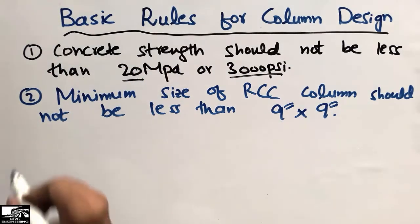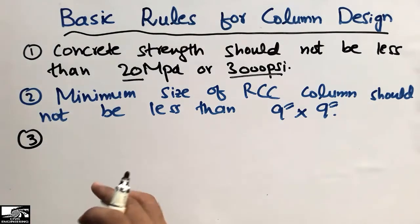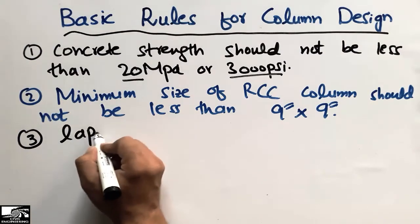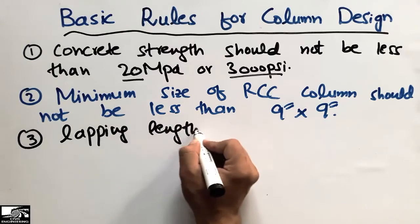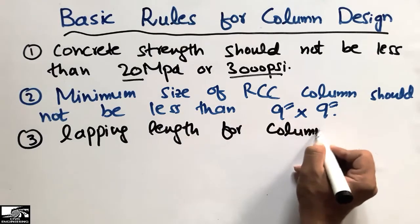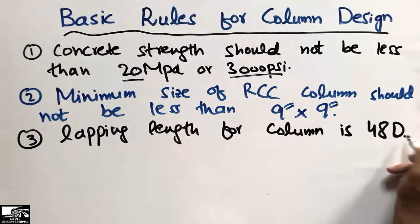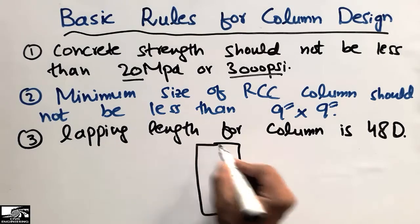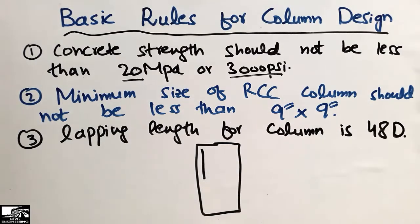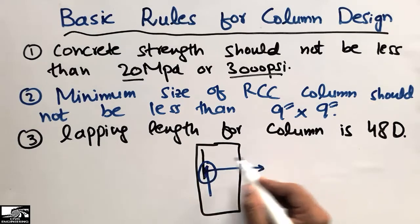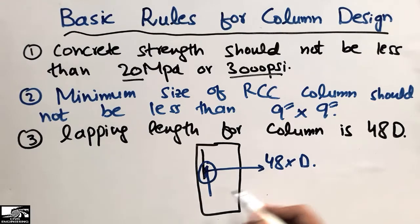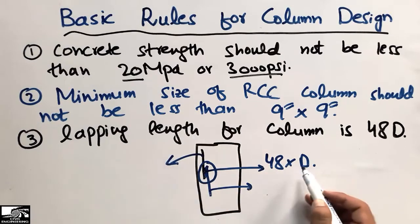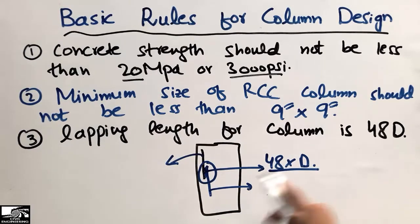The third rule for the design of the column is that we must provide the lapping length. The lapping length for the column is 48 times the diameter of the bar, where D represents the smallest diameter of the bar. For example, if we want to overlap two reinforcements, the lapping length should be 48 × D, where D is the diameter of the smaller bar. This is a very important point for the design of the column.